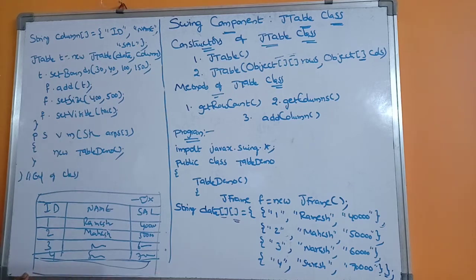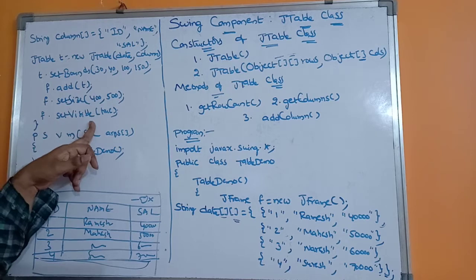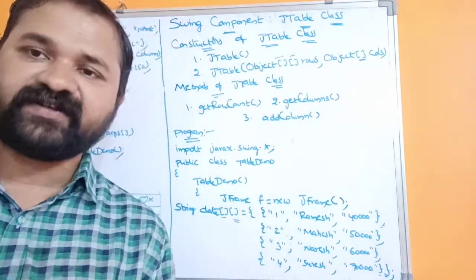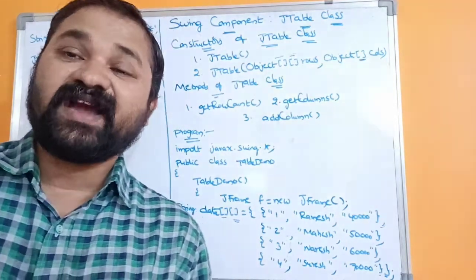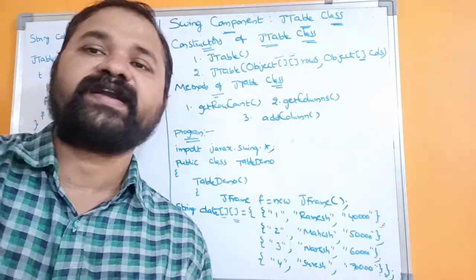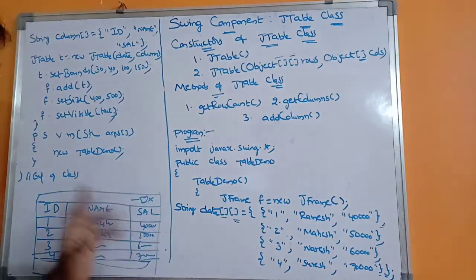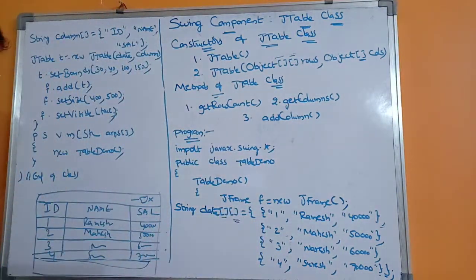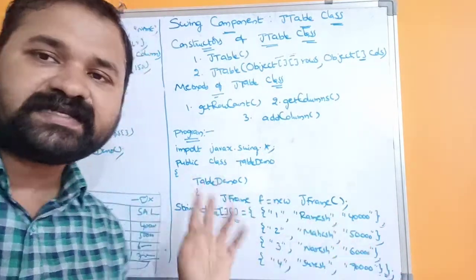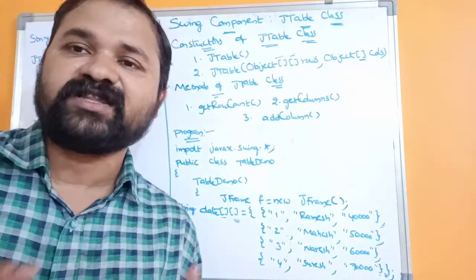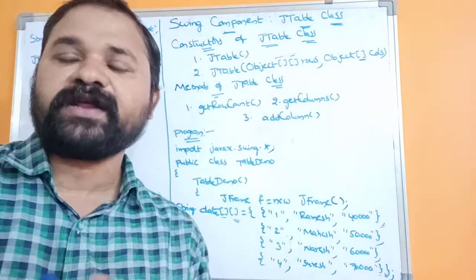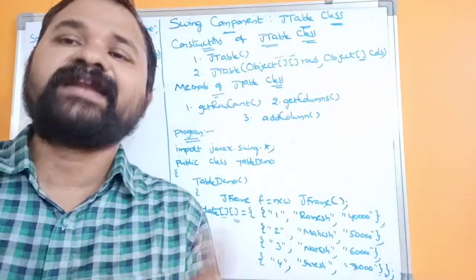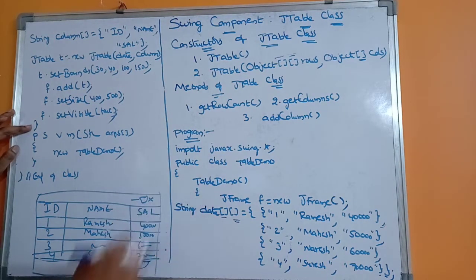Next, f.setSize(400, 500) sets the frame width to 400 and height to 500. Then f.setVisible(true) makes the frame visible, since it is invisible by default. In this program, there is no need to use f.setLayout(null) because JTable uses a grid layout manager by default — grid layout displays information in the form of rows and columns, so a layout manager is already in use.